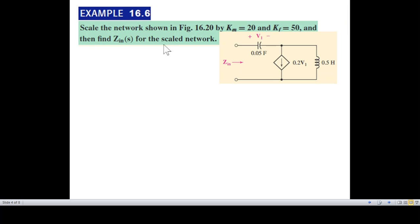And then find Z_in for the scaled network. So what he's saying is we've got to scale this network and then find Z_in for the scaled network. But the concept is not like this. The concept is that for this network we'll find Z_in and then we'll scale the Z_in, the impedance, to the new network.